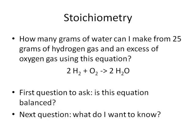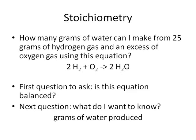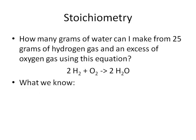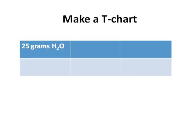The next question we have to ask is, what do we want to know? Well, we go back to the problem and we see that what we want to know is how many grams of water will be produced in this reaction. As with every science problem, you always start off with what we know. What we know is 25 grams of hydrogen gas, or H2. So we'll start there. Make a T-chart beginning with the 25 grams of H2.